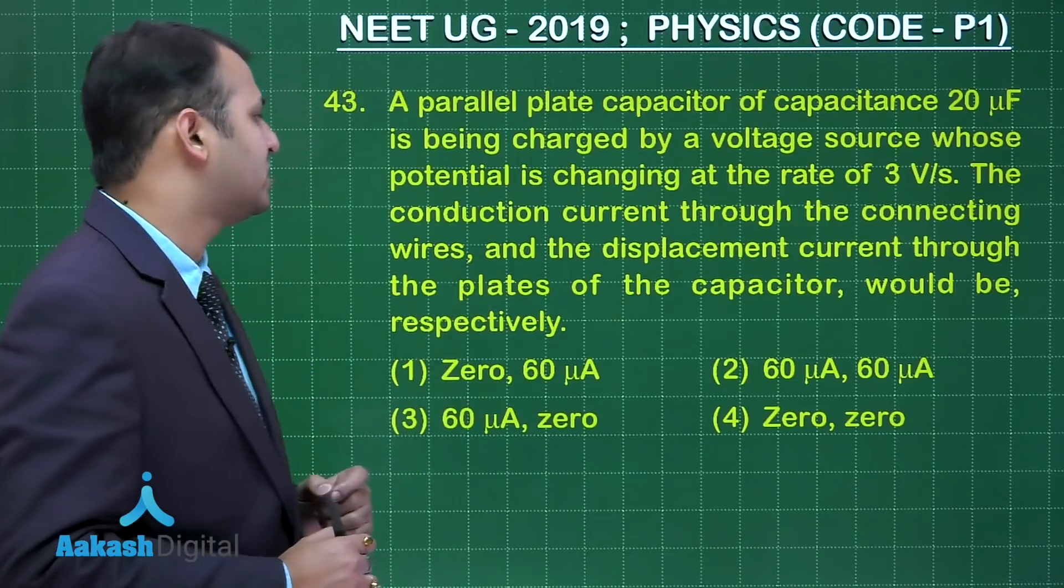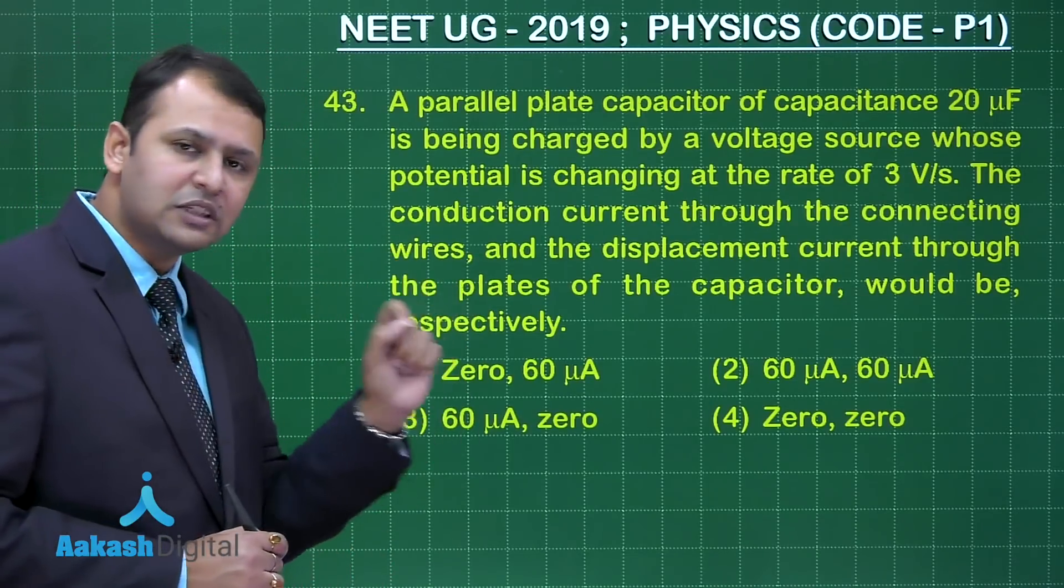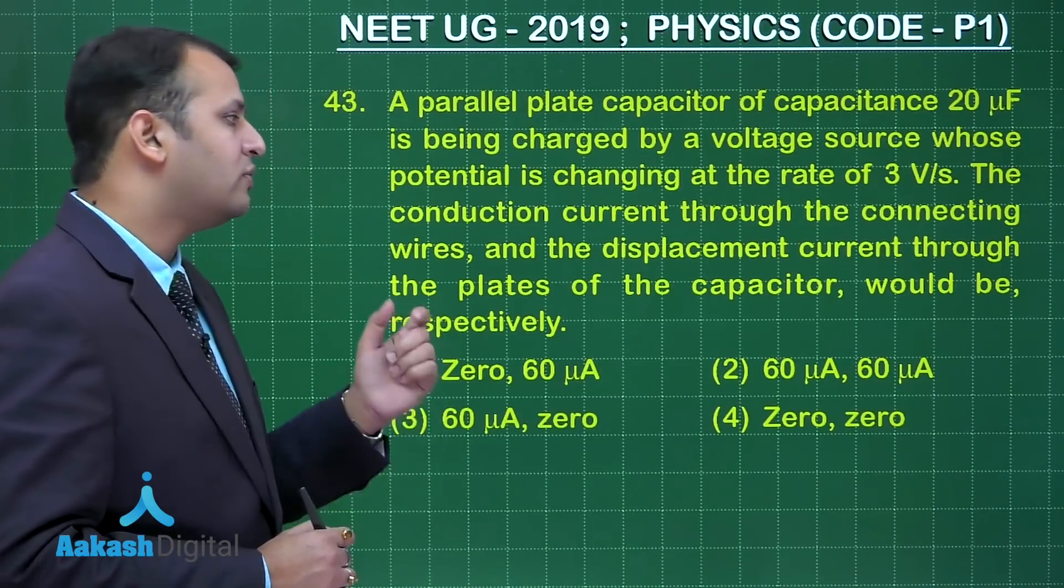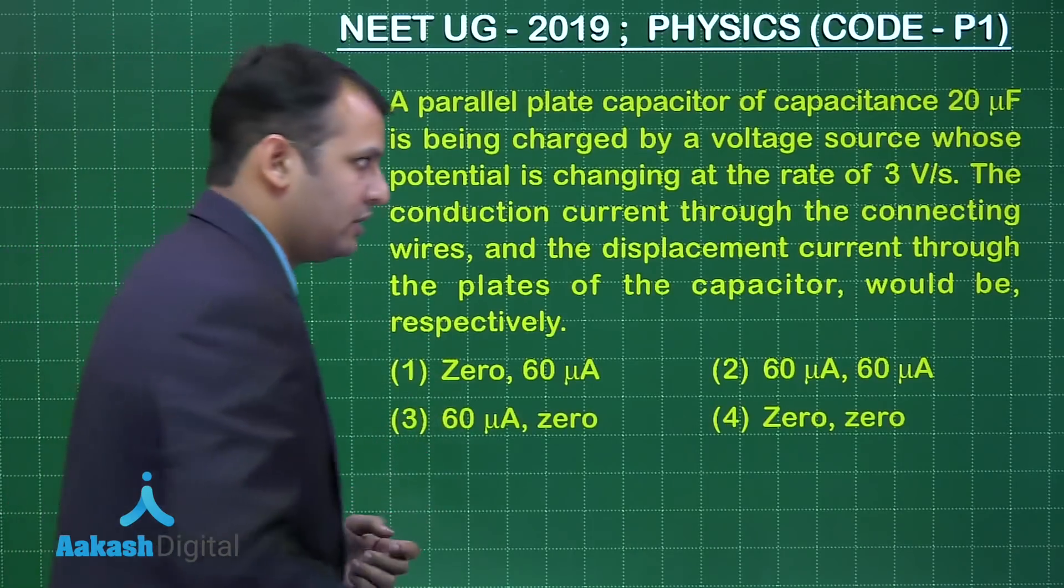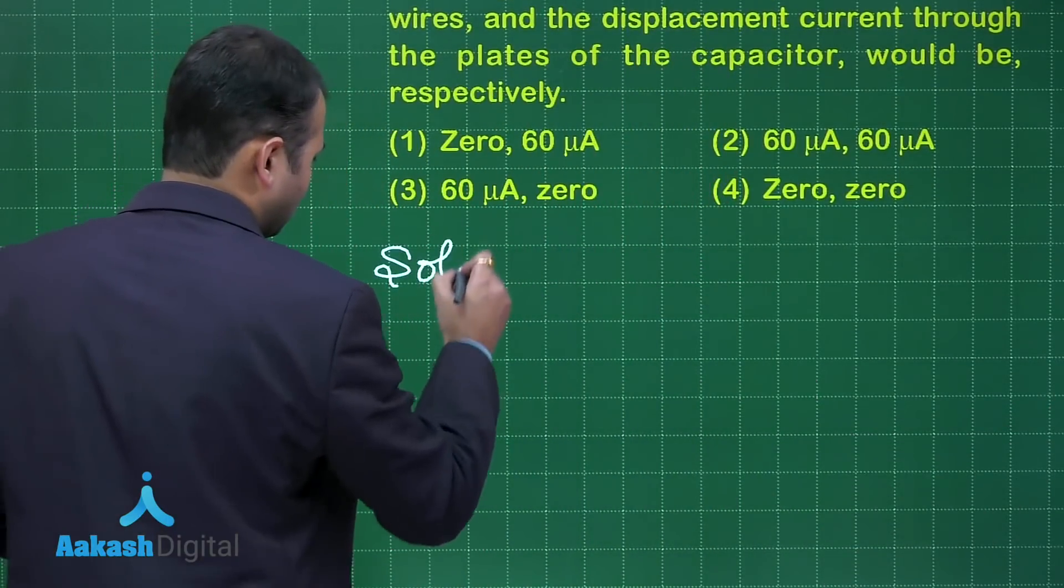changing at a rate of 3 volt per second. The conduction current through the connecting wires and the displacement current through the plates of the capacitor would be respectively. Now in here the very most important thing is let's start with the solution.